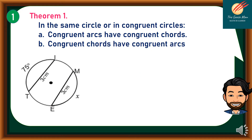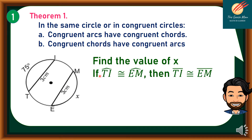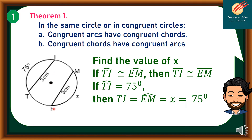For example number 1, let's consider the illustration on the left side. Find the value of X. Take note that if Arc TE is congruent to Arc EN, then chord TE is congruent to chord EN. We can say that Arc TE is congruent to Arc EN, which is the same as X. Therefore, X is also 75 degrees.